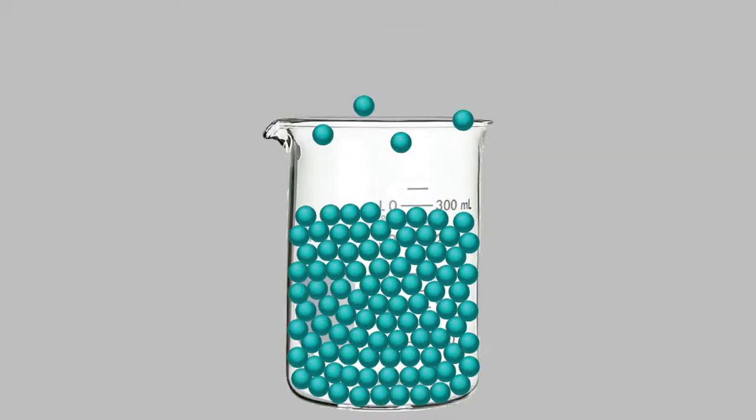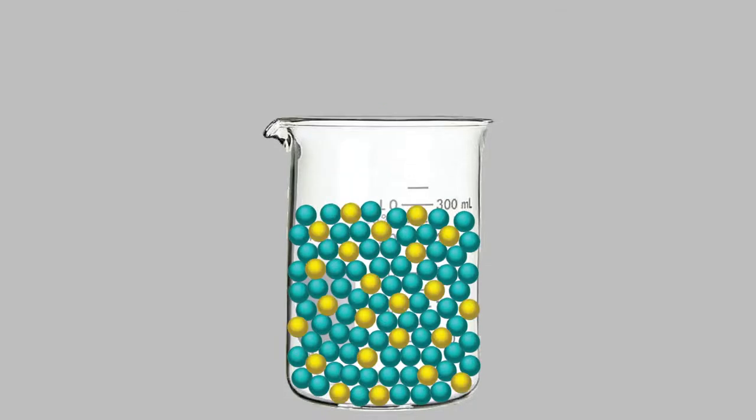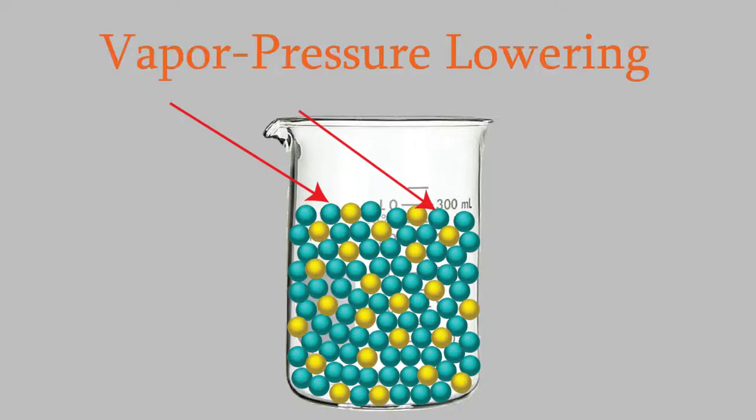Molecules are always escaping from the surface of a liquid. But so far, we've only been thinking about a pure liquid, like water. Now let's imagine what happens when we add a solute to the liquid. When we do that, there aren't as many solvent molecules at the surface of the liquid. That means not as many solvent molecules can escape from the surface, so the vapor pressure of the solvent will go down. And that's all there is to it. The more solute we dissolve in our solution, the fewer the number of solvent molecules that will be at the surface, and the lower the vapor pressure will be. This phenomenon is called vapor pressure lowering, and it's one of those colligative properties I listed earlier.